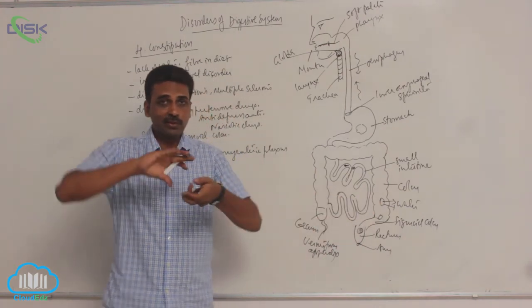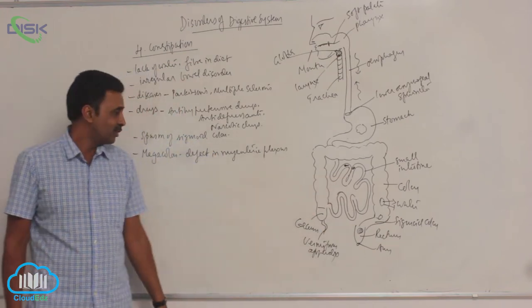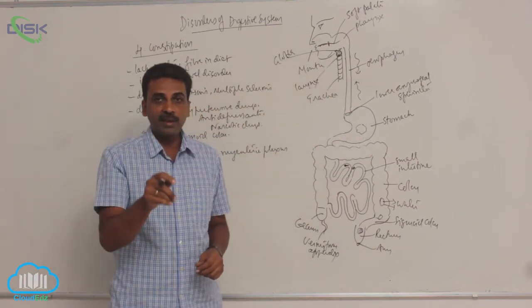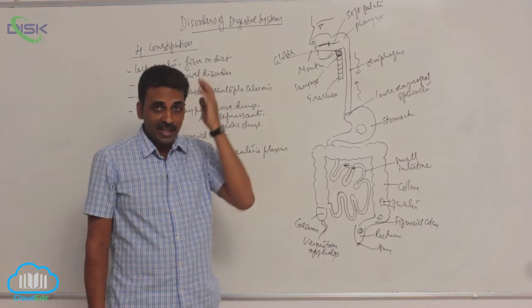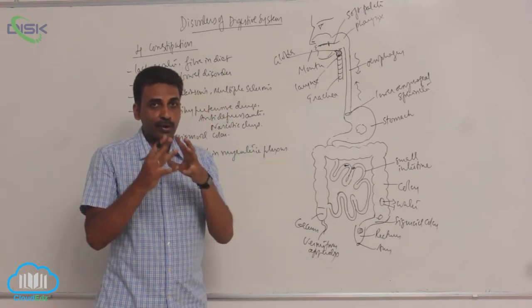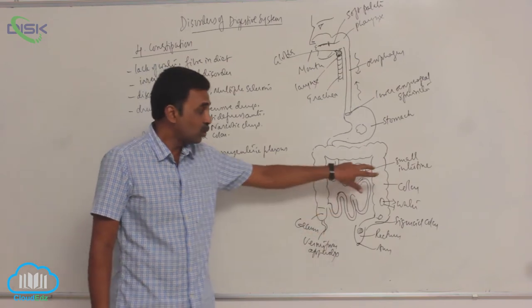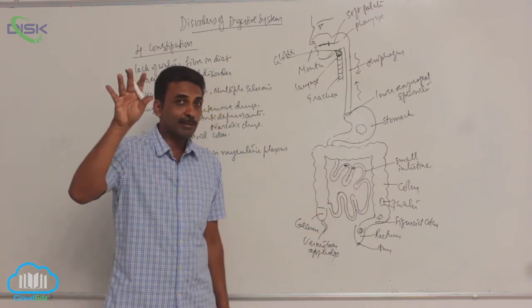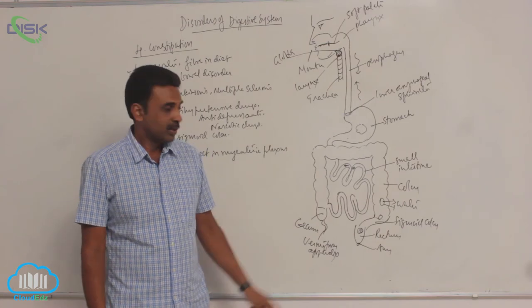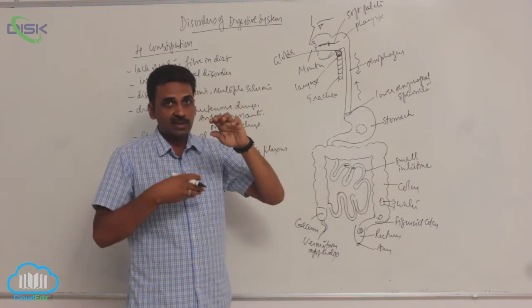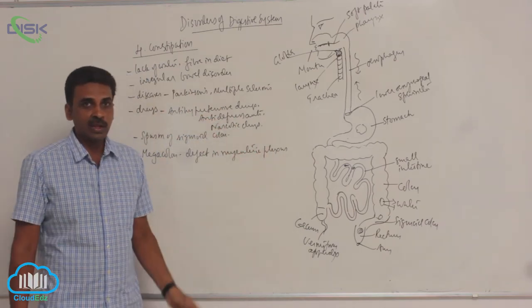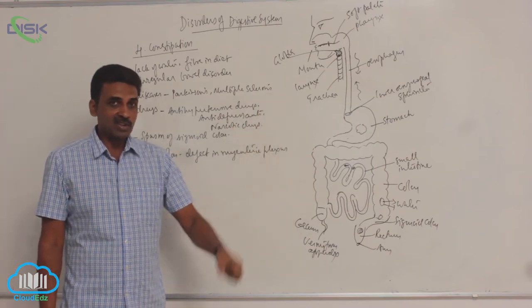Defects in myenteric plexus affect peristalsis. The total peristaltic activity is controlled by nerves from the brain. After nerves enter the wall of the gut, they produce networks of neurons. We have two networks: Auerbach plexus and myenteric plexus. Myenteric plexus is present between the muscles—between longitudinal and circular muscles—and controls peristalsis.